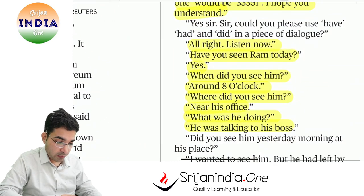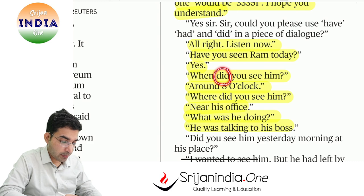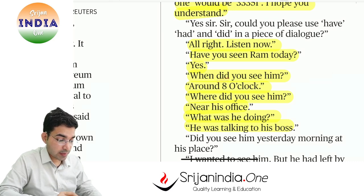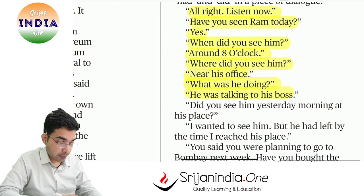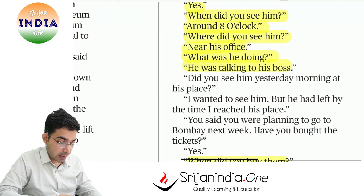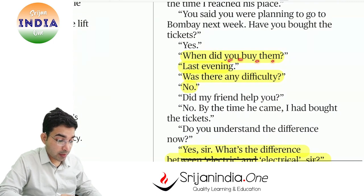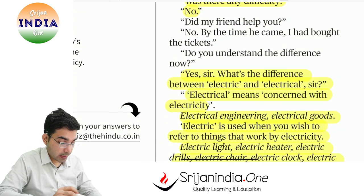Have and did in a piece of dialogue — jaise 'have you seen Ram today?' 'When did you see him?' Aksar students bahut commonly mistake karte hain. 'Did' is already past — toh iske saath ek aur '-ed' nahi lagaenge ya phir ek aur past ka use nahi karenge. Did already ho gaya hai. So hum aise nahi karenge: 'When did you seen him' ya 'saw' — no. Correct hai: 'When did you see him' — simple. Did ke saath hamesha second/third form nahi lagana. Jaise 'when did you buy them', 'was there any difficulty', 'did my friend help you' — like this.